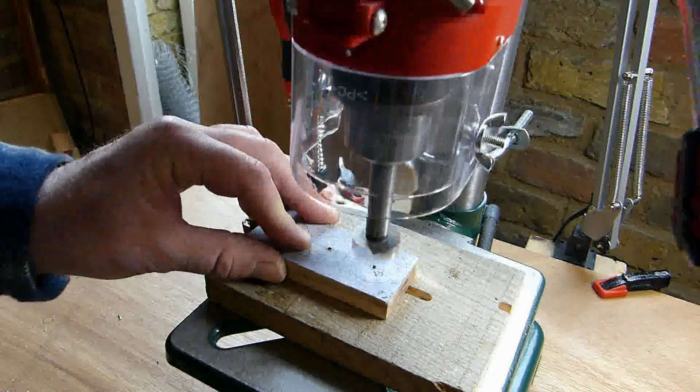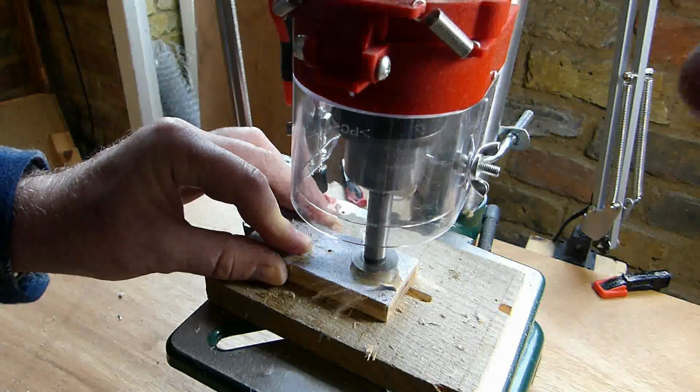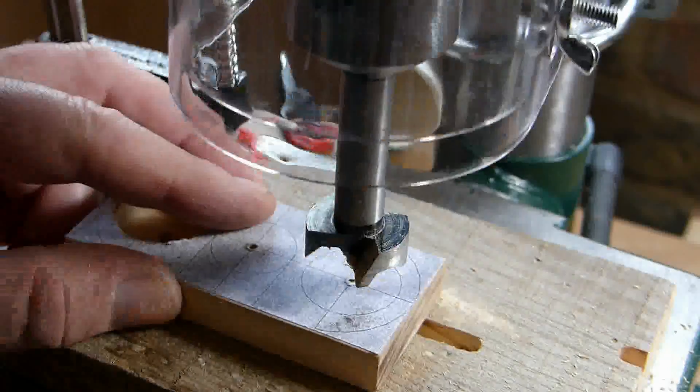To cut the holes for the battery connectors I used a 25mm diameter forstner drill bit and drilled down to a depth of 7.5mm.